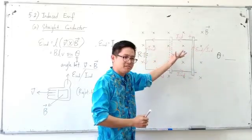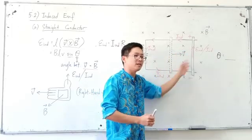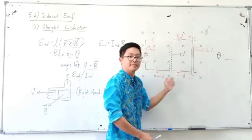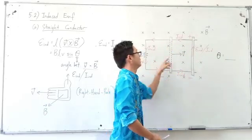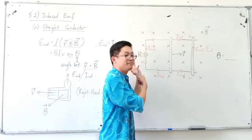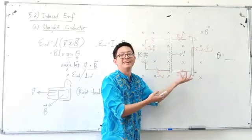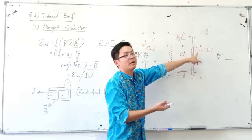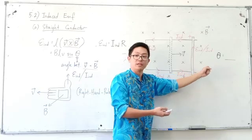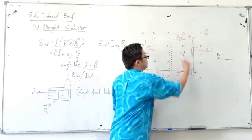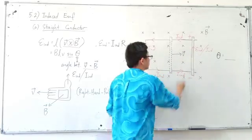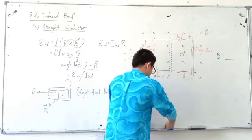Is there any battery in this circuit? No battery — just a magnetic field and a straight conductor with a circuit. But the LED lights up without any battery. Why? Because EMF is induced when the straight conductor cuts through the magnetic field lines. So this straight conductor becomes like a temporary battery — with a positive terminal and a negative terminal.